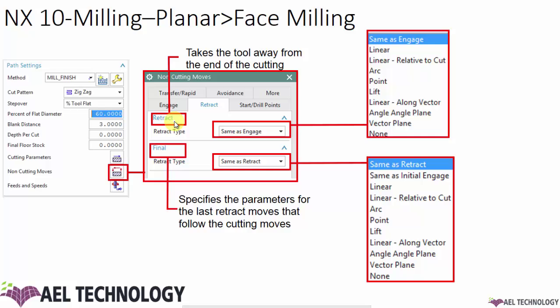How are you going to define the final retract? The tool movement is very similar to engage. We have all the options seen in engage: linear, linear to relative cut, arc, point. The only different option apart from all the tool engagement types is lift. Apart from lift, we have linear along vector, angle angle plane, vector plane, and none. We have already seen and explained all these cutter movements in our previous session.